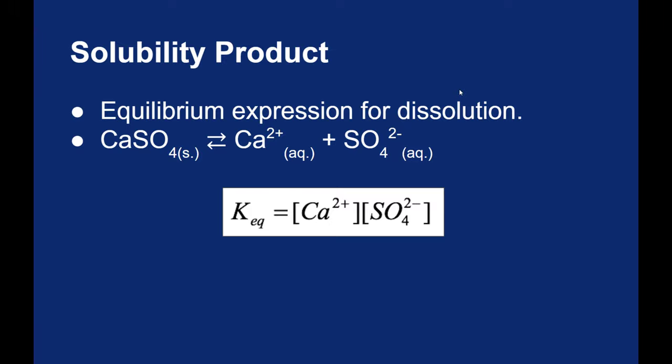Now we've seen Ka's for acids and Kb's for bases and Kw's for water. For the dissolving process, we call this Ksp. Sp is solubility product, it is the product of the dissolved ions.